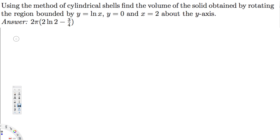Hey, what's going on guys? Let's do this problem. The question is asking, using the method of cylindrical shells, find the volume of the solid obtained by rotating the region bounded by y = ln x, y = 0, and x = 2 about the y-axis.